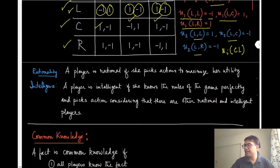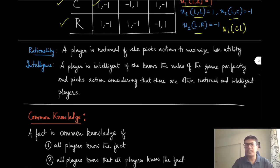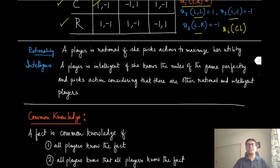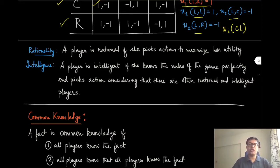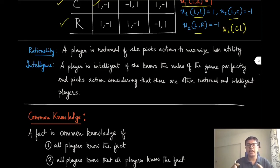When we analyze games, we make two assumptions: players are rational and intelligent. Rationality means each agent picks actions or strategies that maximize their utility, as given in the matrix. Intelligence is slightly circular in its definition — a player is intelligent if she knows the rules of the game perfectly and picks actions considering that the other players are also rational and intelligent. In particular, an intelligent player will think and pick actions like a game theorist.